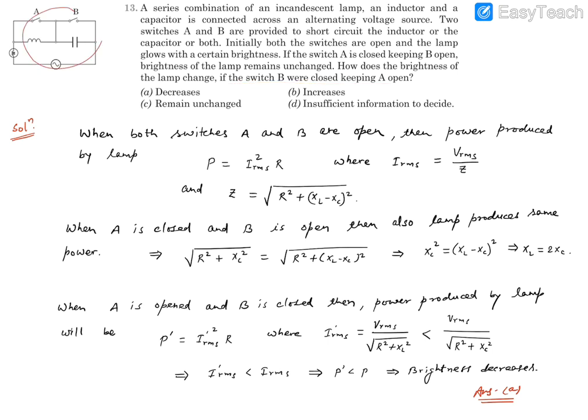So this circuit we need to look here fully. This is AC source and this is bulb lamp which has a resistance, and this is inductor and this is capacitor. Now switches are shown over here.